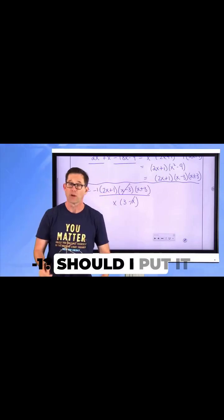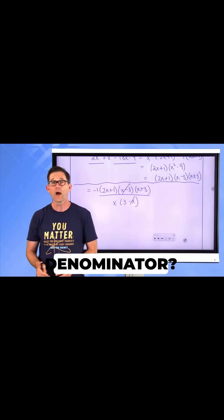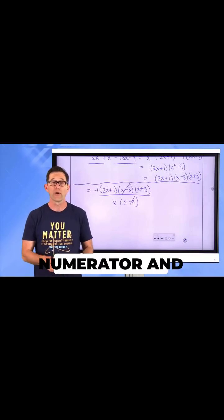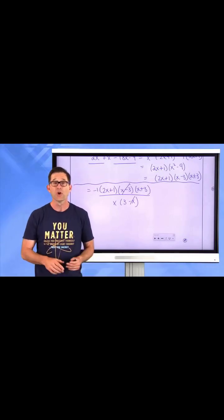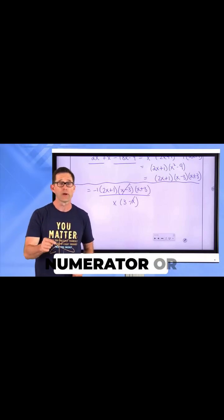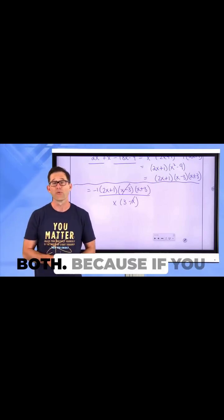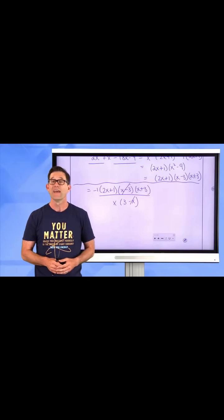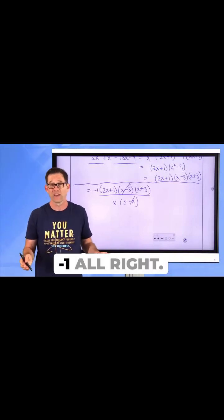Where should I put the negative 1? Should I put it in the numerator? Should I put it in the denominator? Should I put it in both the numerator and the denominator? The answer is choose 1, either the numerator or the denominator, but not both. Because if you put it in both locations, then you're just putting a 1 there. You're not really putting a negative 1.